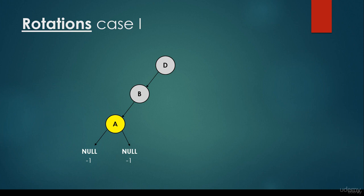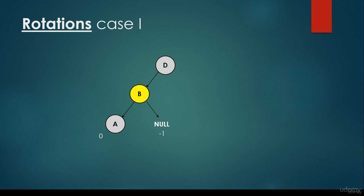We have to check the height parameters. For a leaf node, if a given node hasn't got any children, it's going to have a null left child and a null right child. We assign the height parameter minus 1 to these null values. The difference between minus 1 and minus 1 is 0, so this subtree is balanced. Node B doesn't have any right child, so it has height parameter minus 1. The left child of node B is node A, a leaf node, and we assign height parameter 0 to all leaf nodes. The difference between the two is equal to 1, so we don't have to make any rotations.